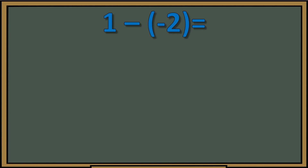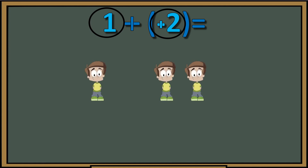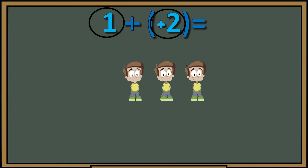Example: one minus negative two. Every time we have a minus and a negative next to each other, we chop the minus and chop the negative, making them both a plus and a positive. Now I apply the strategy: circle the number with the sign in front. The sign in front of two is now a positive symbol. We have one good guy and a group of two good guys — they like each other, so we add them and they become three. Our answer is positive three.